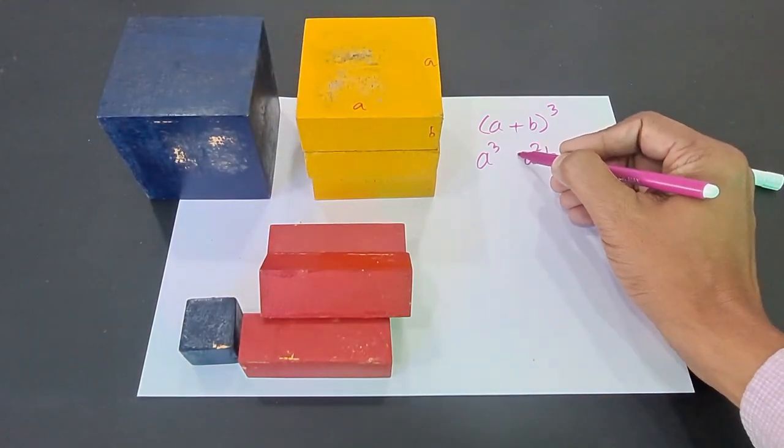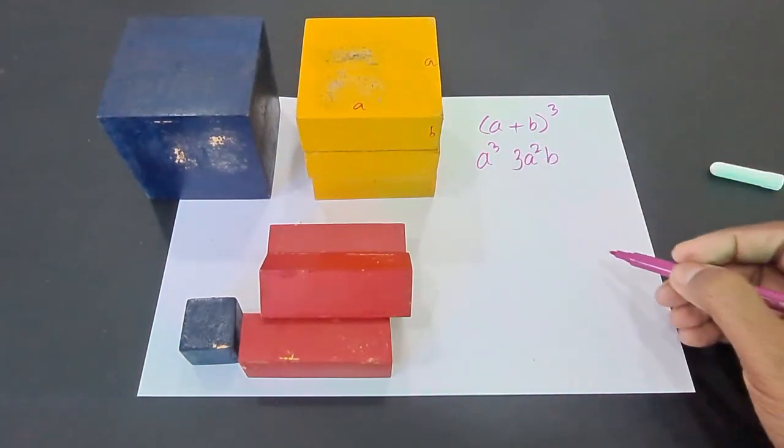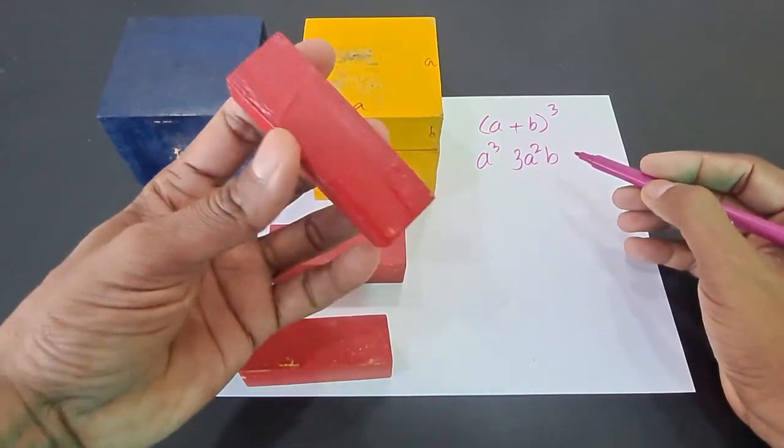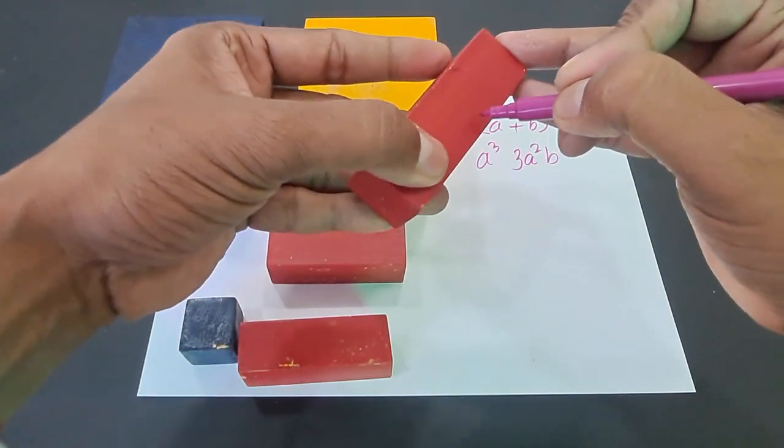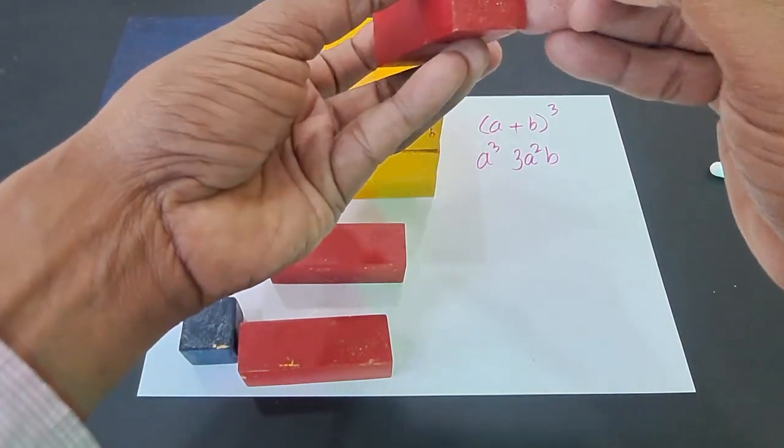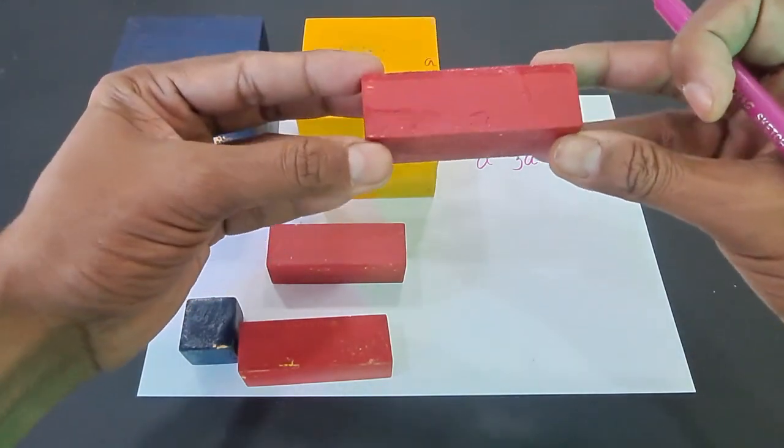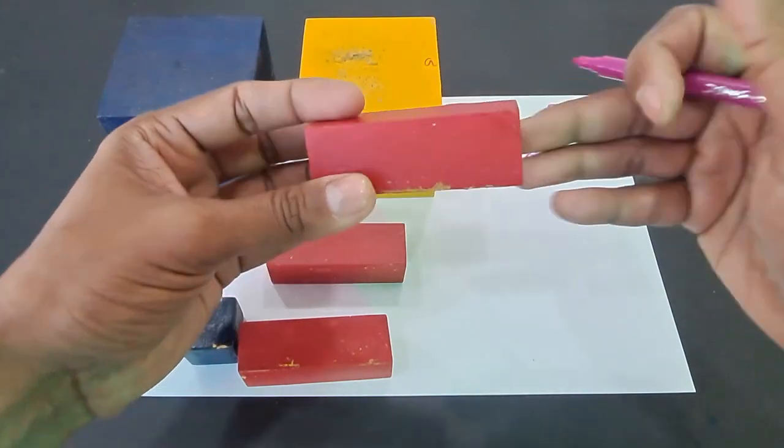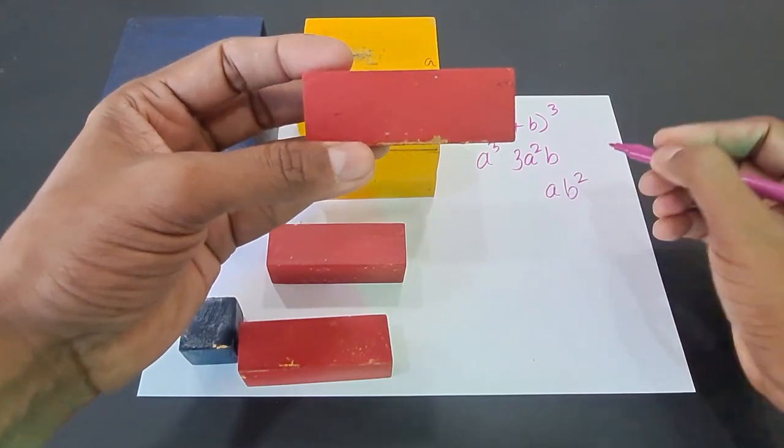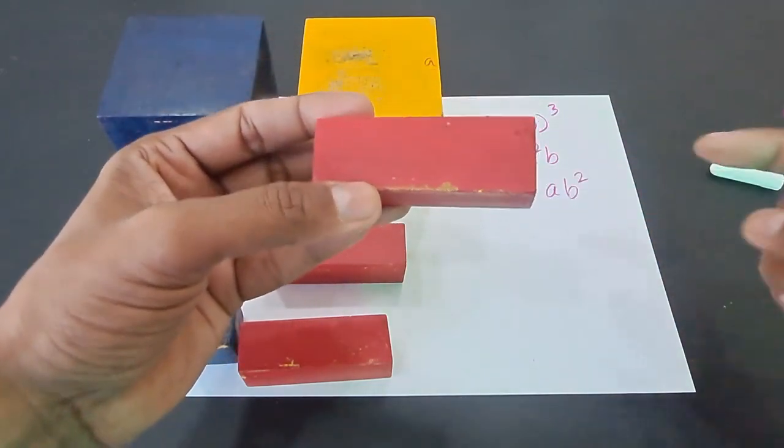Likewise, if you see this, we have this as a, this is b, and this is also b. So the volume of this particular cuboid will be ab², because a times b times b is the volume.